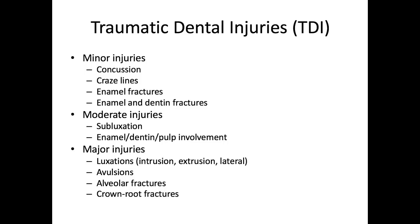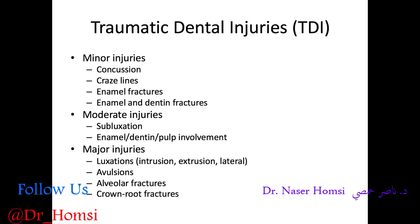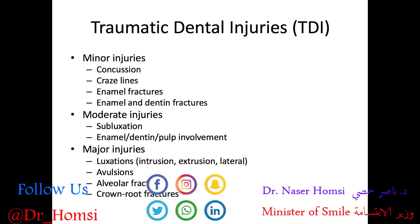Moderate injuries have more of a guarded prognosis and require a longer-term follow-up. And then we have our major injuries, which are our luxations — intrusion, extrusion, and lateral luxation — avulsions, alveolar fractures, and crown and root fractures. These are our Ellis class 5 and class 6 fractures. They involve a high cost, major multi-specialty interventions, have a reduced or poor prognosis, and require a long-term follow-up.